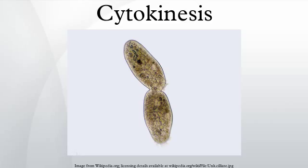Cytokinesis must be temporarily controlled to ensure that it occurs only after sister chromatids separate during the anaphase portion of normal proliferative cell divisions. To achieve this, many components of the cytokinesis machinery are highly regulated to ensure that they are able to perform a particular function at only a particular stage of the cell cycle. Cytokinesis happens only after APC binds with CDC20, which allows for the separation of chromosomes and myosin to work simultaneously.